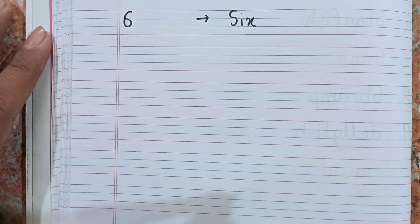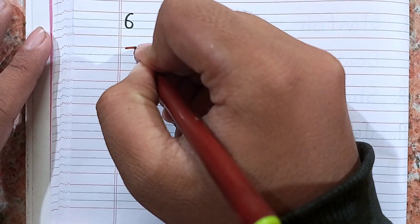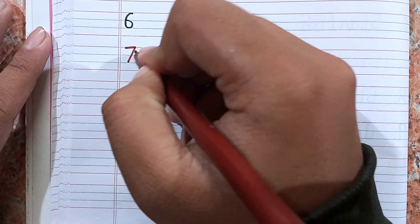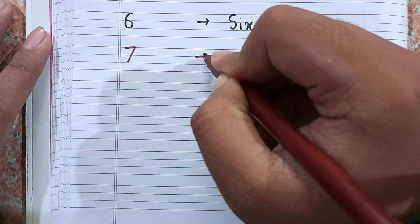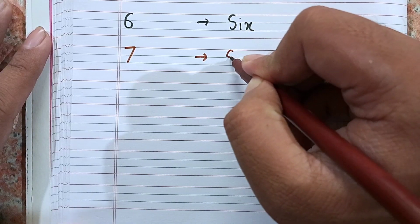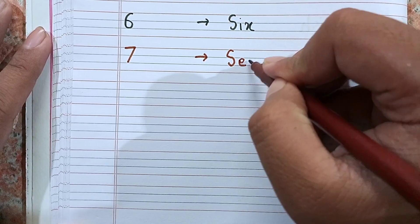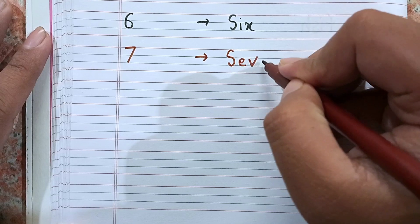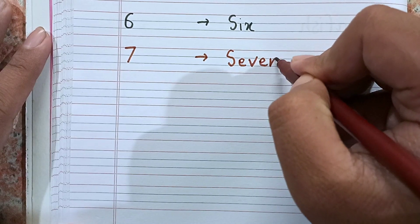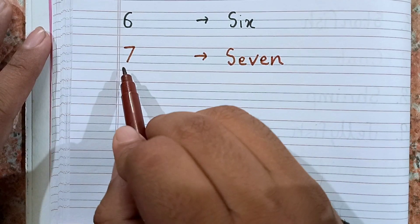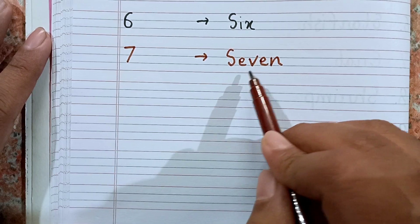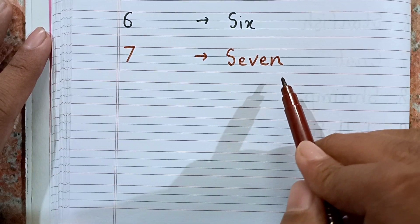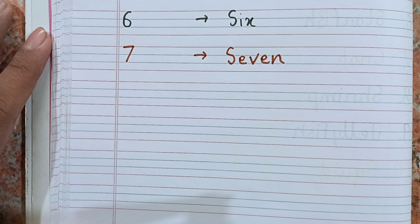After 6, the next number will be 7. Now I am writing 7. This is 7, and the spelling of 7 is S-E-V-E-N.